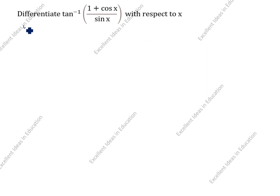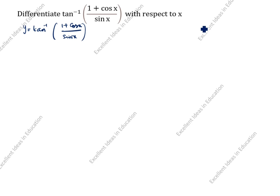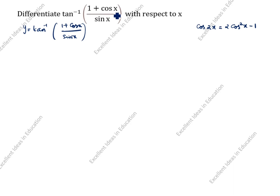What is given: y is equal to tan inverse of (1 plus cos x) divided by sin x. We recall the cos x formula: cos 2x is equal to 2 cos square x minus 1. We see in this question we have 1 plus cos x.